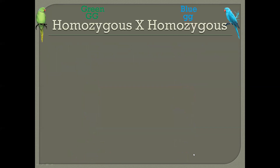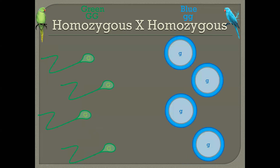In the first cross, we're looking at the parents both being homozygous — one for green and one for blue. So the male being green, his genotype would be capital G, capital G — homozygous for green. And the blue bird, the female, would have small letter G, small letter G — two of the blue alleles. These individuals undergo meiosis and form gametes. The male having capital G, capital G — when it separates in gamete formation, every single one of the sperm cells produced by him would have a capital letter G. And the female, each one of her gametes — the ova that are produced — would all have the small letter G.